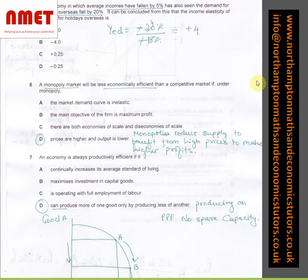In question number 6, a monopoly market will be less economically efficient than a competitive market if under monopoly, prices are higher and output is lower. Because we know by experience, monopolies reduce supply to benefit from higher prices to make higher profits. A monopoly cannot set both prices and quantity. What they do normally is to get higher profits, they'll try to increase the price. To increase the price, what they do is they reduce the supply of the commodity in the market.